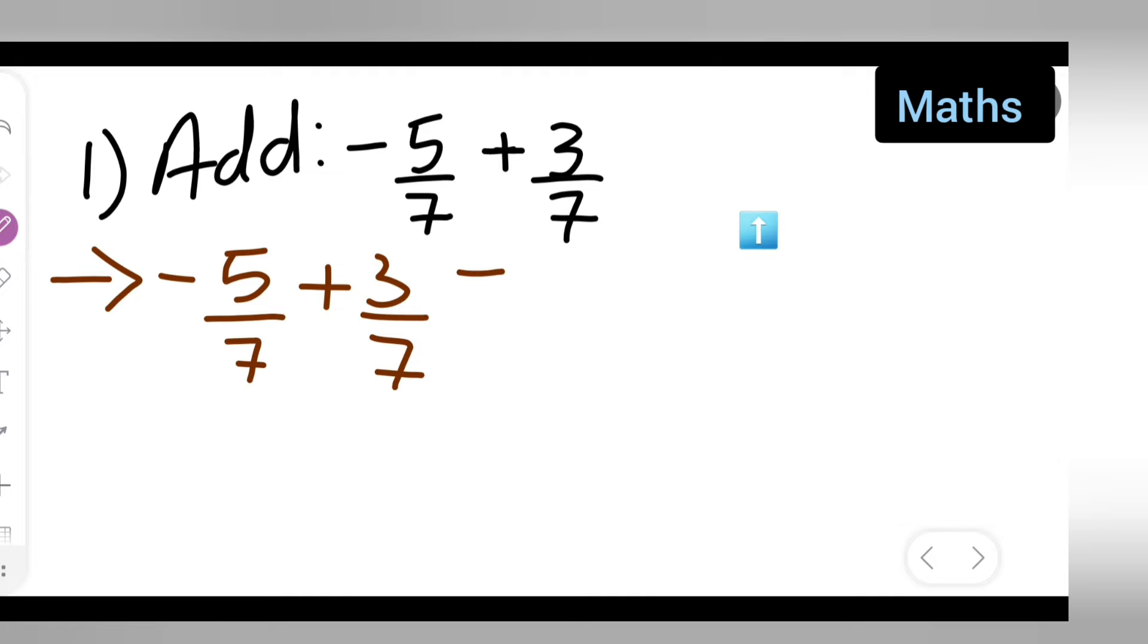Now, this is equal to... here the denominator is the same, so write down negative 5 plus 3 upon, take the 7 common, which is equal to... now negative 5 plus 3 means you'll have to subtract this.